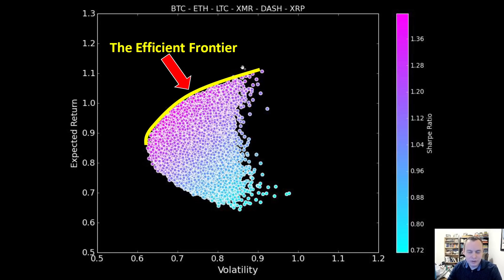What you see up here is the efficient frontier. Ideally, if you had a portfolio consisting of bitcoin, ethereum, litecoin, XMR, dash, and XRP, you would want that portfolio to exist on the efficient frontier, because on this efficient frontier you're getting the highest expected return for a given volatility or risk level. Volatility equals risk here — the higher the volatility, the more risk. If you're okay with say 80% annualized volatility, you want the highest expected return for that, and that would be at the top of the efficient frontier.